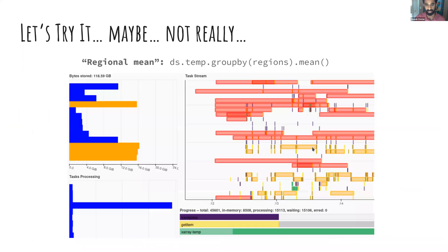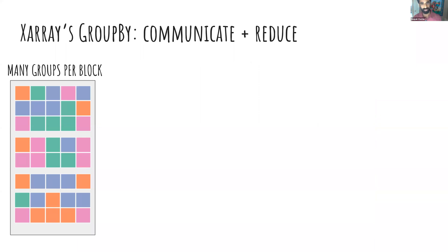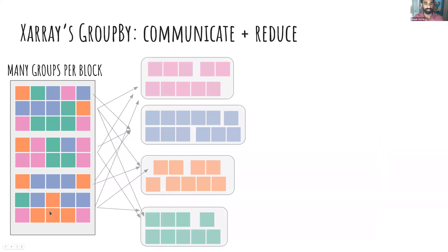When you compute the second one — many groups per block — you end up with something that might be familiar: the Dask dashboard showing a lot of red, meaning a lot of communication and not much computation. On the left, memory usage is high — 120 gigabytes for a half-terabyte dataset. So it's high-memory. It doesn't actually fail, but you'd have to throw more workers and more memory at it.